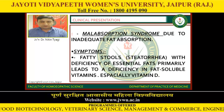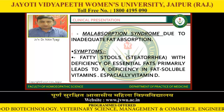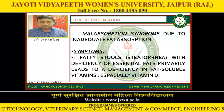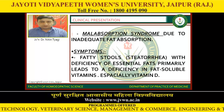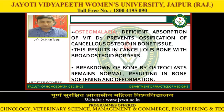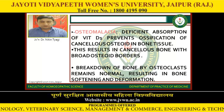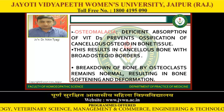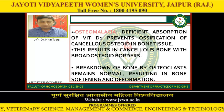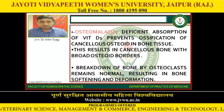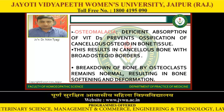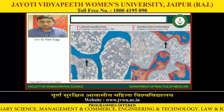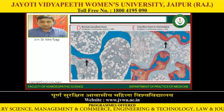Clinical presentation: there is malabsorption syndrome due to inadequate fat absorption. Symptoms include fatty stool — steatorrhea — with deficiency of essential fats, primarily leading to deficiency of fat-soluble vitamins, especially vitamin D. Osteomalacia: deficient absorption of vitamin D prevents ossification of cancellous osteoids in bone tissue. This results in cancellous bone with broad osteoid borders. There is breakdown of bone by osteoclasts, remaining normal, resulting in bone softening and deformation. These are the pathological changes occurring in bone due to deficiency of vitamin D in celiac disease.